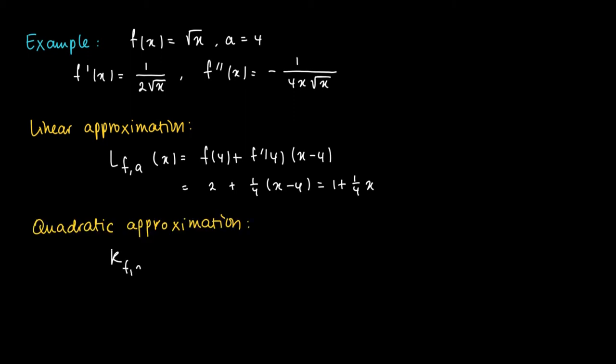Now the quadratic approximation builds on the linear approximation. So we may just repeat 1 plus 1 over 4 times x, then add a quadratic term.